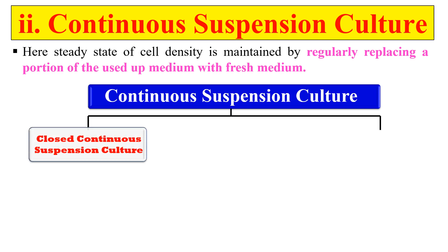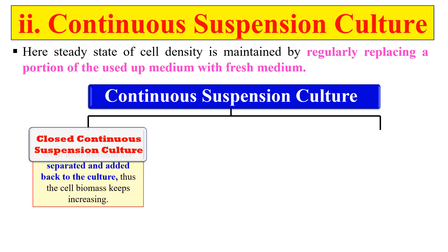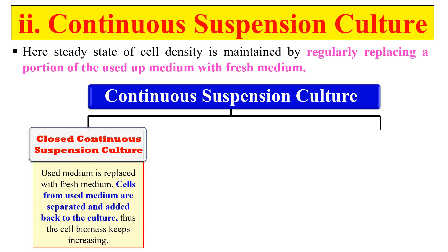Continuous suspension culture can be of two types. In closed continuous suspension culture, we replace the used media with fresh media, but we also add back the cells separated from the used media. We take out the used media, separate the cells, and add those cells back to the culture. As a result, biomass keeps increasing because we are both adding fresh media and returning cells from the used medium.